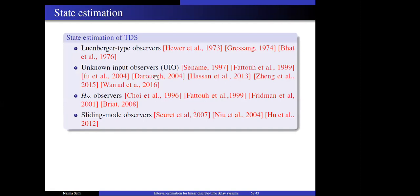In the context of state estimation, various studies have been proposed to design state observers for time delay systems over the past decades. Some authors worked on the expansion of Luenberger-type observers for linear time delay systems. Other researchers have designed unknown input observers for linear and nonlinear time delay systems to solve the problem of state estimation in the presence of unknown inputs. In addition, research has been conducted in H-infinity optimal observation and filtering, and sliding mode observers for linear and nonlinear time delay systems. These results focus on point estimation.